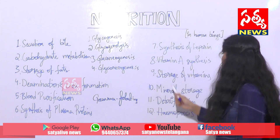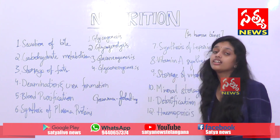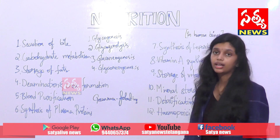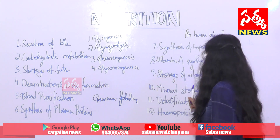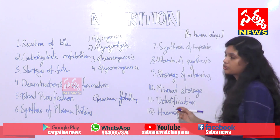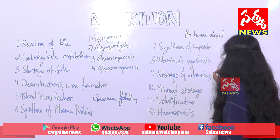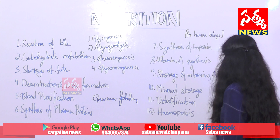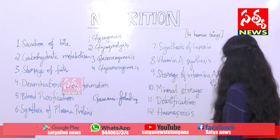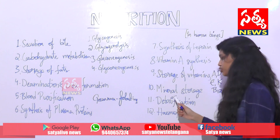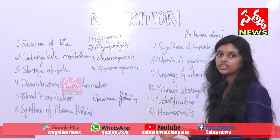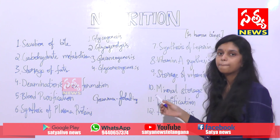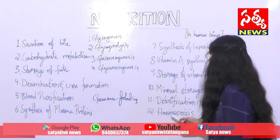Now, vitamin A synthesis: the liver converts beta carotene into vitamin A. And storage of vitamins: the liver stores vitamins like vitamin A, vitamin D, vitamin E, vitamin K, and vitamin B12.